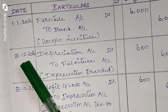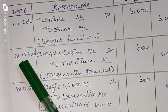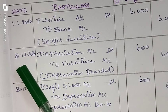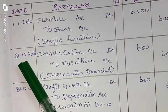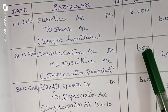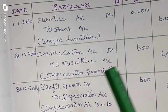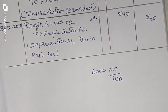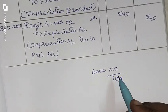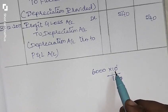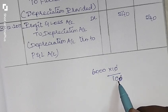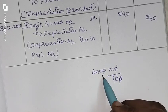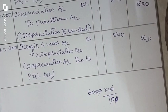So, for 31st December 2016, the first year depreciation: we calculate 10% on the original value of Rs. 6,000, which gives us Rs. 600. This is the first year depreciation.